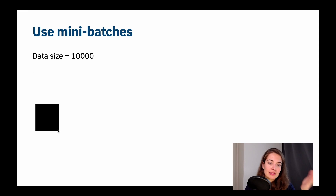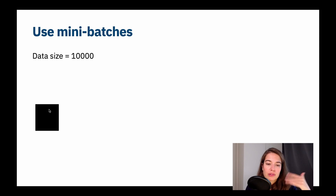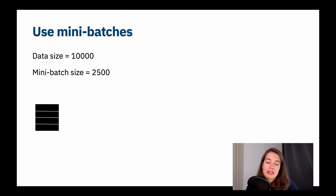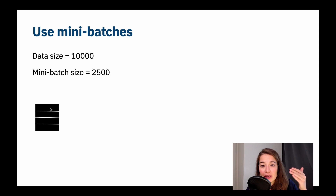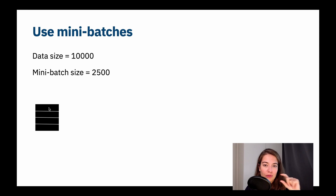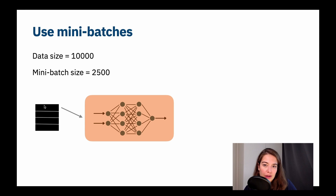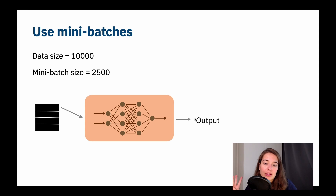Say this is our data — it has 10,000 data points, 10,000 examples. I determine my mini-batch size to be 2,500. What happens is we divide our data into four groups, and each of these four groups is going to have 2,500 examples. Then I take the first 2,500 examples and feed them into the network, and calculate an output.